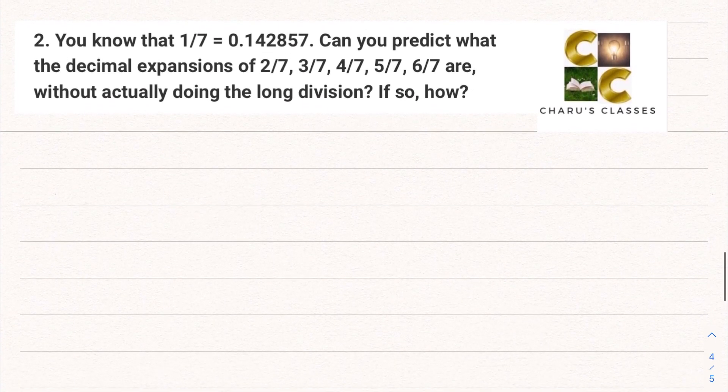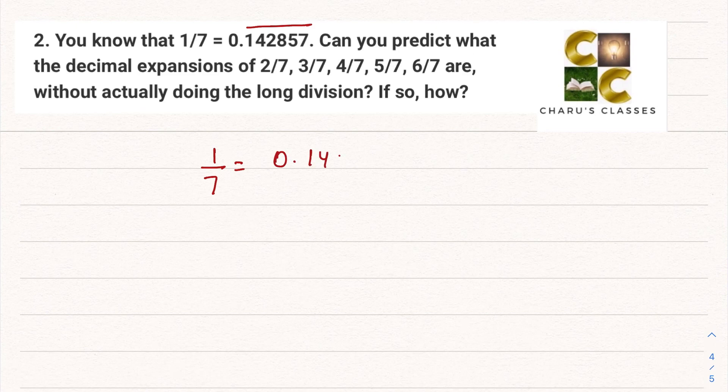Question number 2: You know that 1 by 7 is 0.142857 bar. Can you predict what the decimal expansion of 2/7, 3/7, 4/7, 5/7, 6/7 is without actually doing the long division? If so, how?